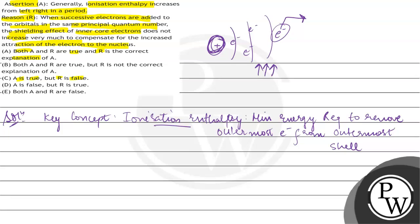When you are going from left to right in a period, the electrons are added consecutively. You add one electron to every atom, so the electrons will be added to each atom in a period. The ionization enthalpy will increase because